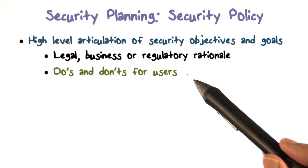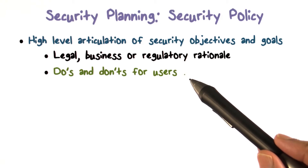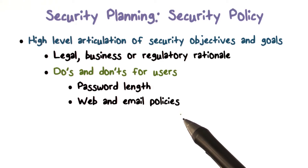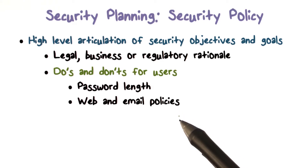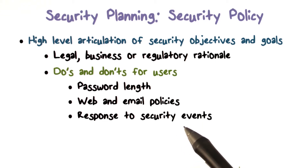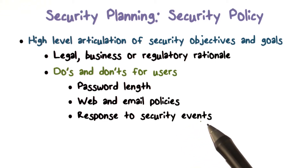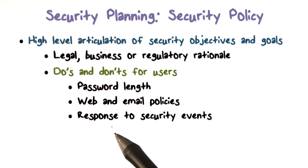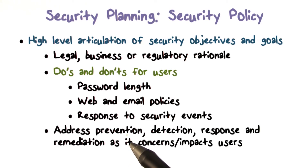The policy really defines what you should do and what should not be done. For example, we talked about passwords — what kind of password you should choose, what the length of a password would be. We may have web and email policies: can you surf the web while you're at work? The policy might also say that if there is some security event that occurs, what sort of response are we going to have? If your machine gets compromised, do you have to inform somebody? So the security policy covers these do's and don'ts.